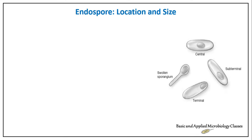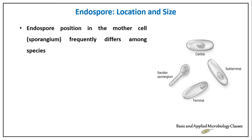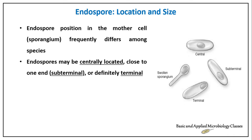Regarding endospore location and size, one vegetative bacterial cell under unfavorable conditions will form one spore. The bacterial cell that allows spore formation within it is known as the sporangium — the mother cell. The position of the endospore inside the sporangium differs from one bacterial species to another.